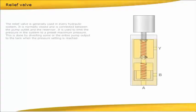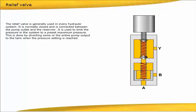The relief valve is generally used in every hydraulic system. It is normally closed and is connected between the pump outlet and the reservoir. It is used to limit the pressure in the system to a preset maximum pressure. This is done by diverting some or the entire pump output to the tank when the pressure setting is reached.